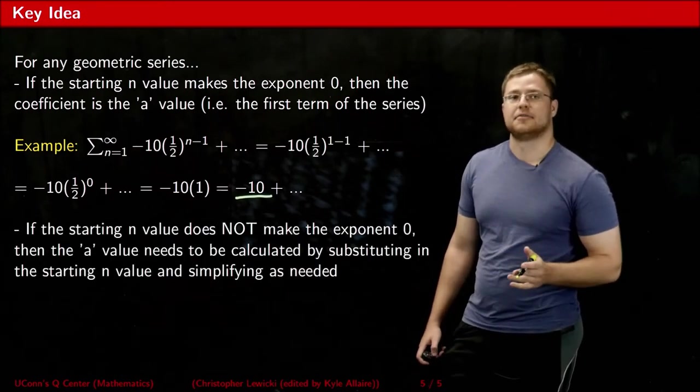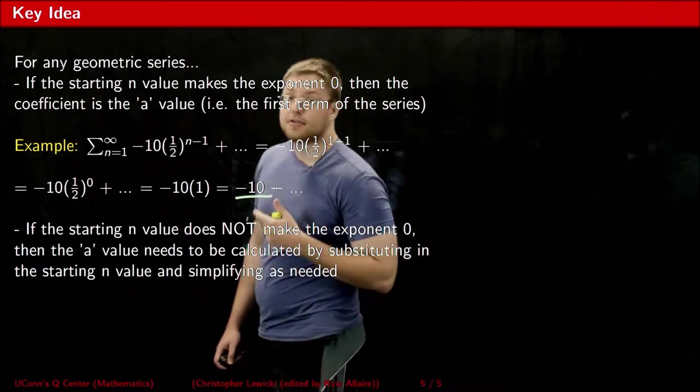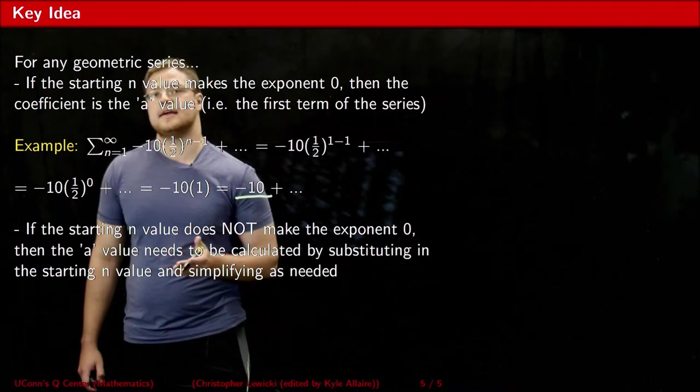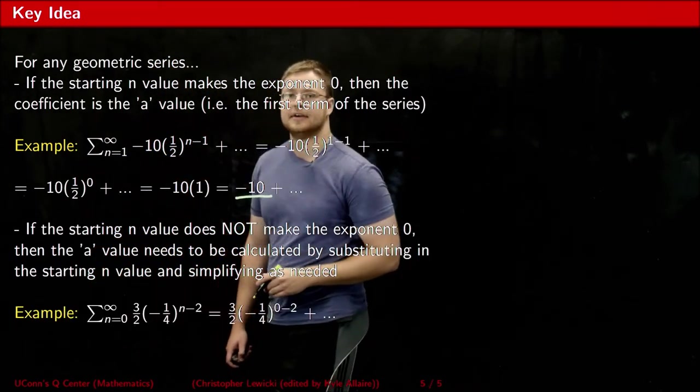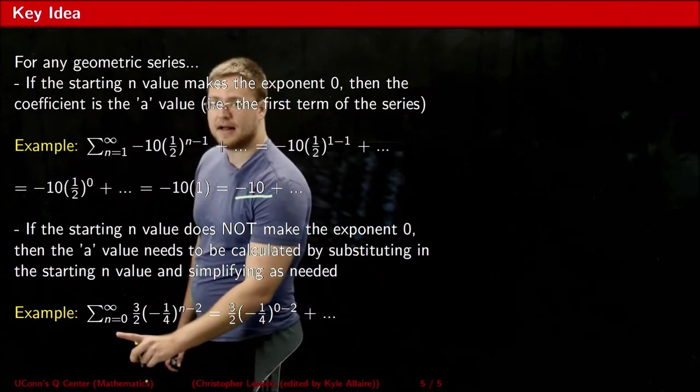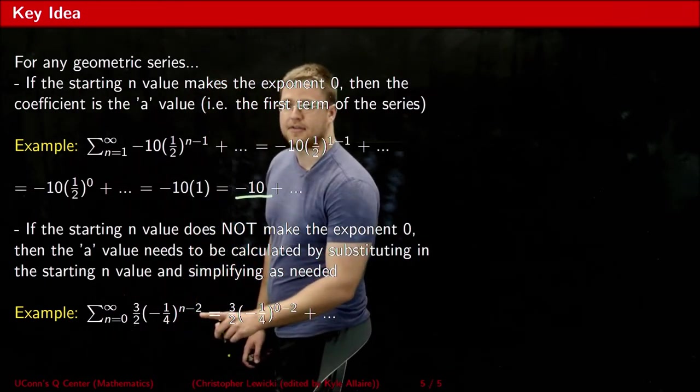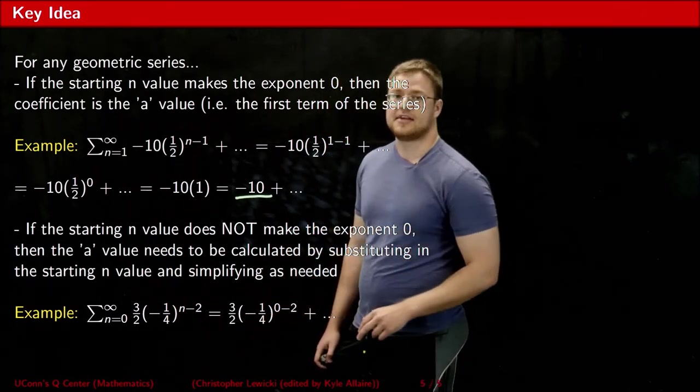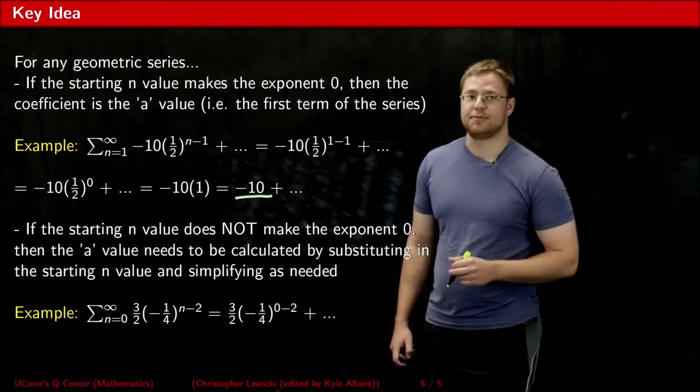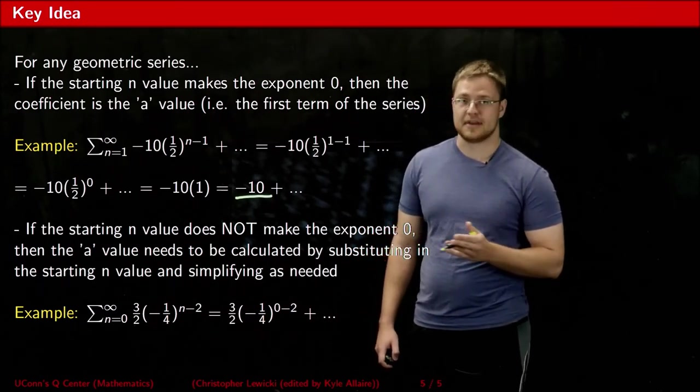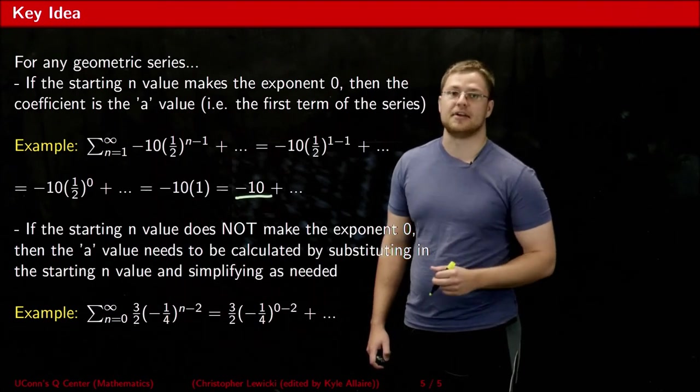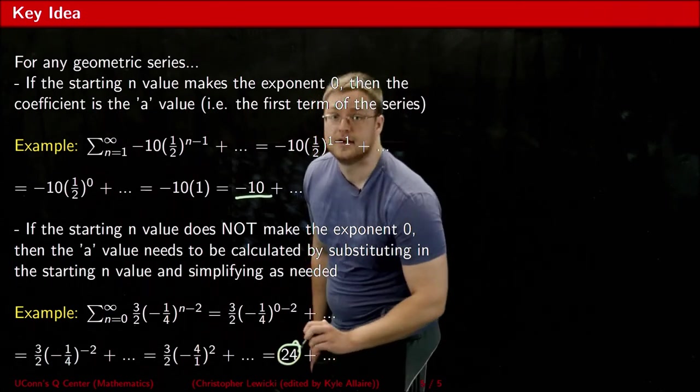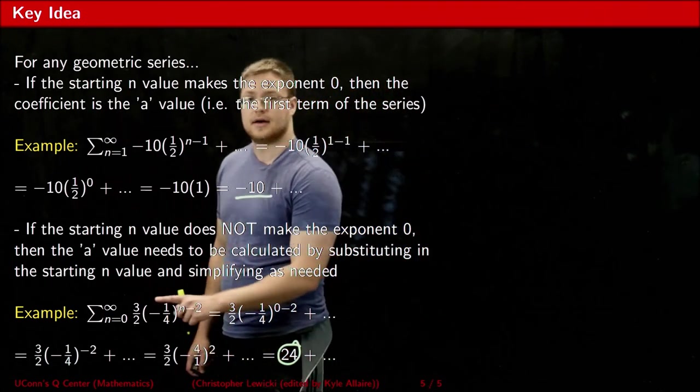Now as for the other way around, if your starting n value does not make your exponent 0, then the a value needs to be calculated the same way that I calculated it on the previous slide. In this example, our starting n value is 0, our exponent is n minus 2. Obviously, substituting n equals 0 is not going to make the exponent 0. So what we need to do is simplify that expression, and whatever the number is that we get afterwards, that is going to be our a value. Simplifying the expression gave me 24, so 24 is the true a value of this series.